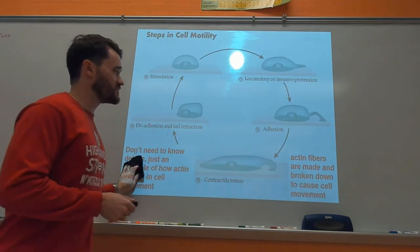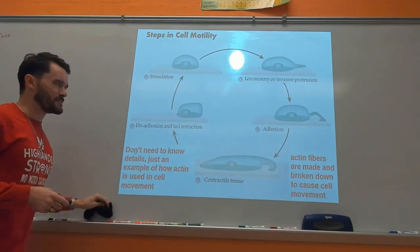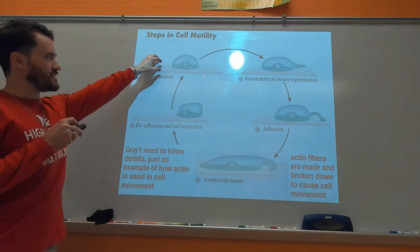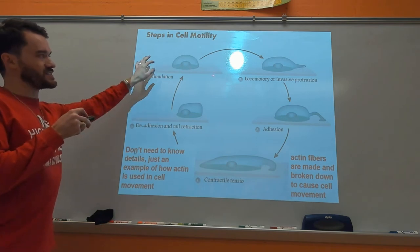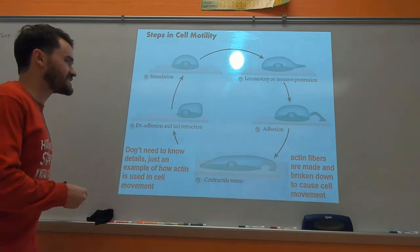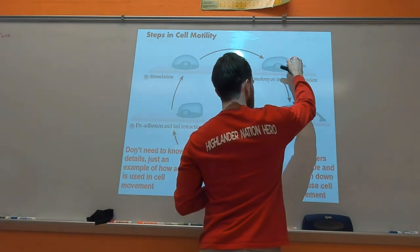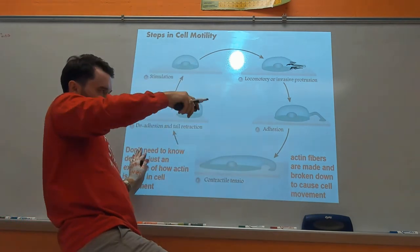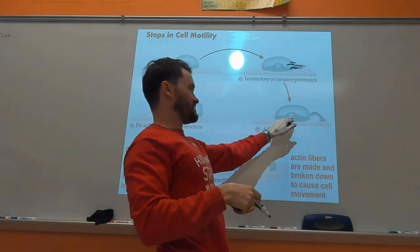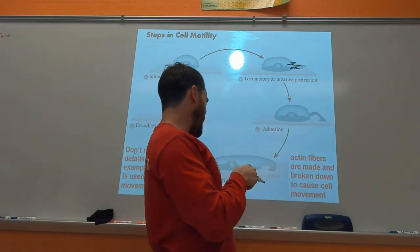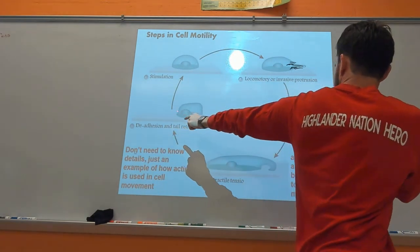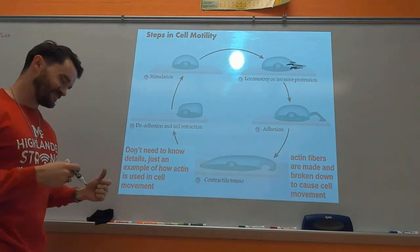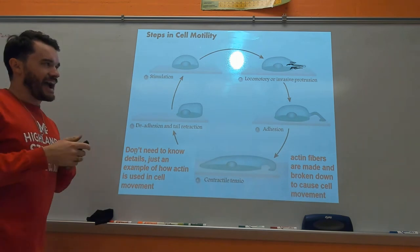Actin is also used in cell motility. A cell that wants to move will extend out a bunch of actin filaments - since actin is really flexible - like extending out with its leg. It then adheres and contracts, pulling back the actin filaments from the other end of the cell. Just know that actin can be used in cell movement.